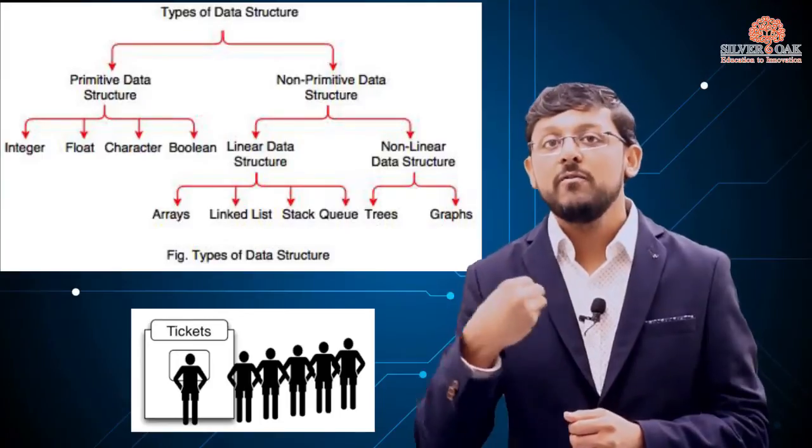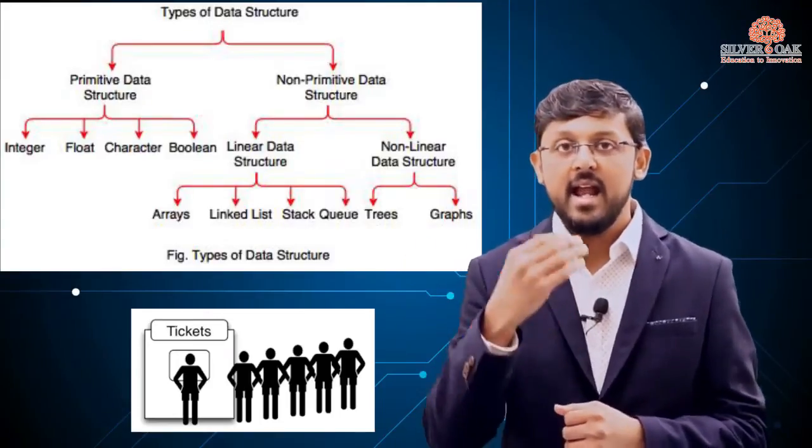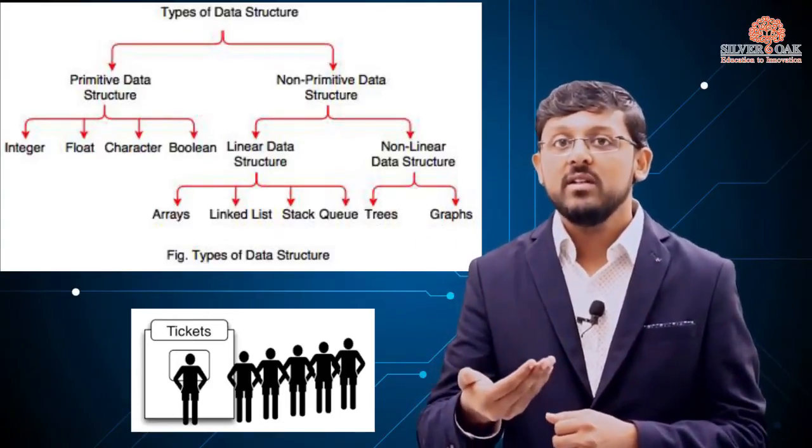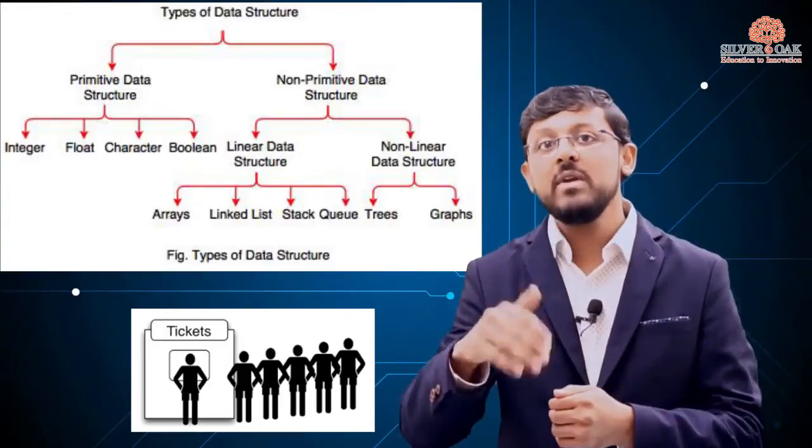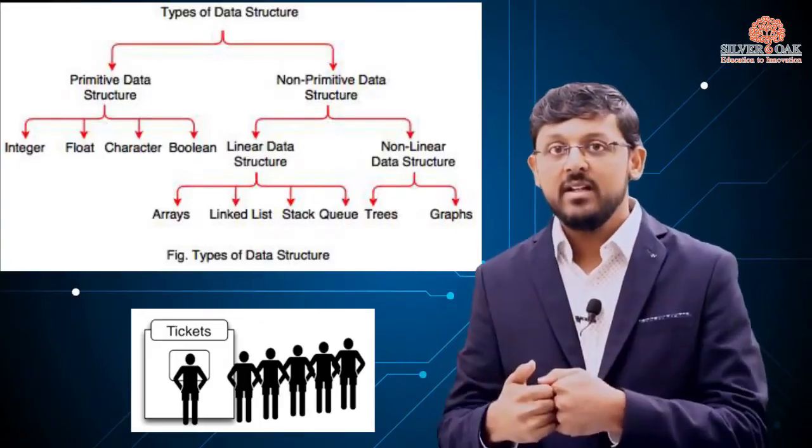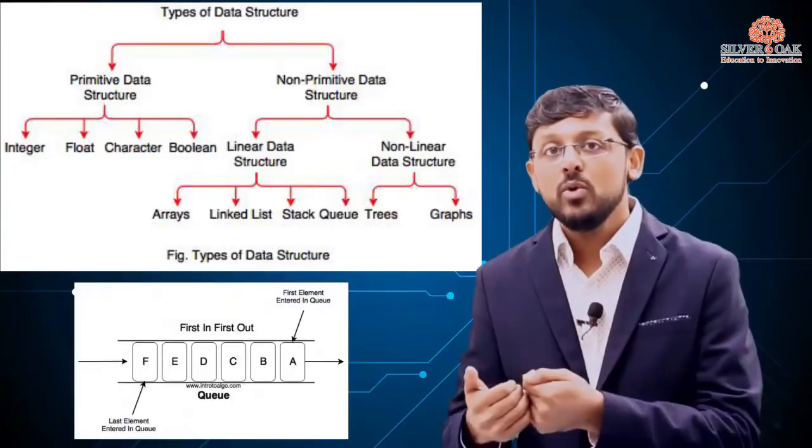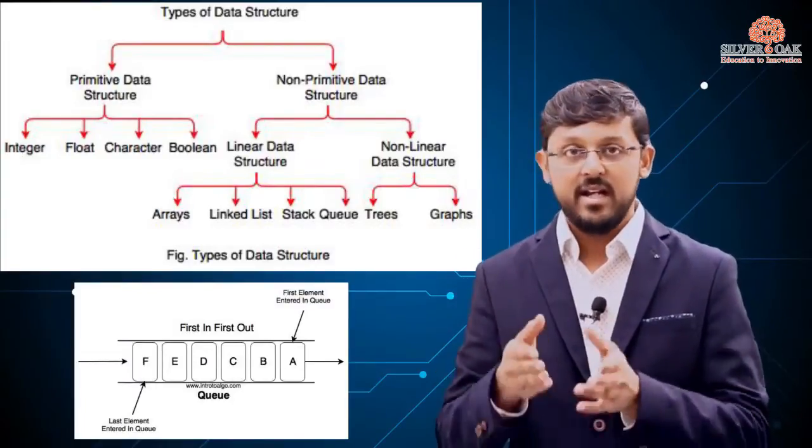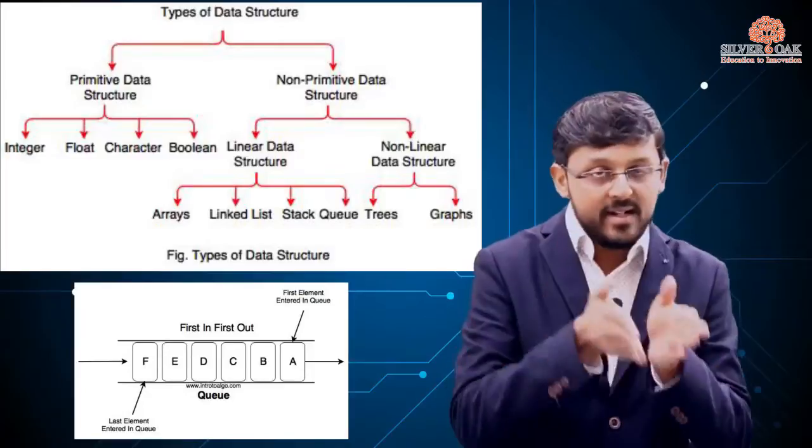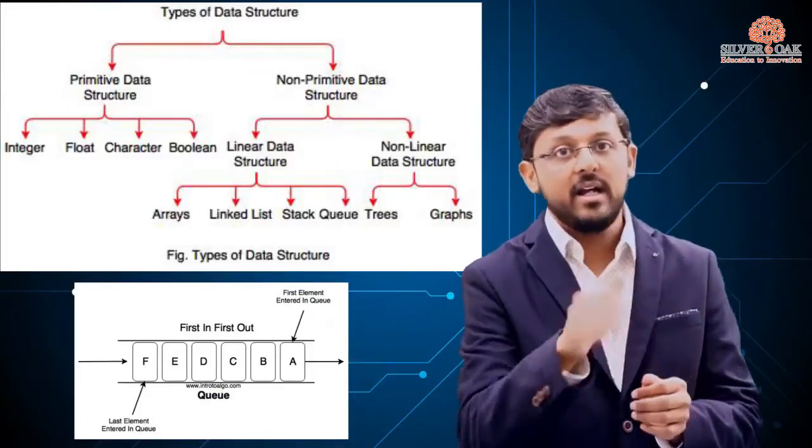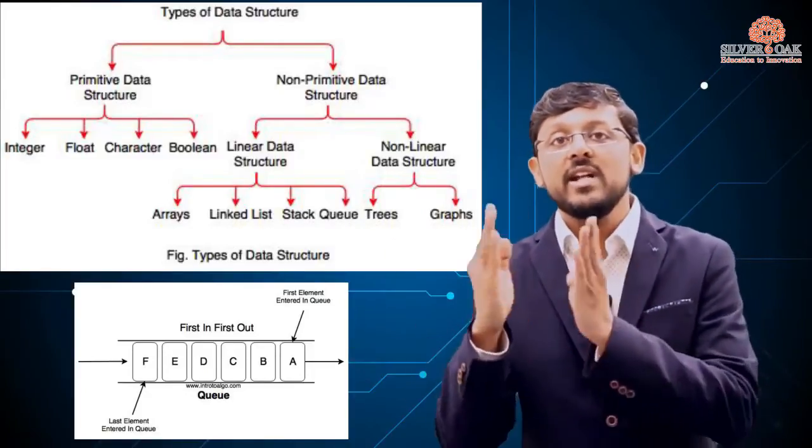When we use a queue, we enter at the end, and the first one will be first out. Similarly, in computer science, a queue is first-in-first-out. It's a non-primitive linear data structure in which insertion and deletion occur from different ends.